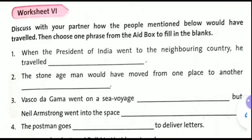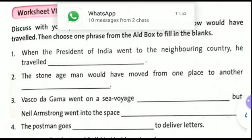Second: the stone age man would have moved from one place to another on foot — 'on foot' in the second sentence. Third: Vasco da Gama went on a sea voyage by ship, but Neil Armstrong went into space in a spacecraft. So the answers are 'by ship' and 'in a spacecraft.' Fourth: the postman goes on a bicycle to deliver letters — 'on a bicycle' in the fourth sentence.